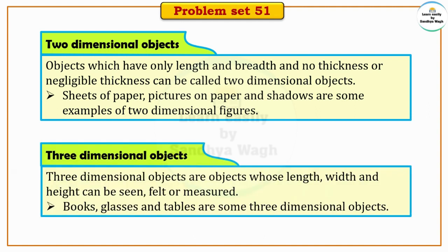Three dimensional objects are objects whose length, width, and height can be seen, felt, or measured. A three dimensional object has length, width, and height. Books, glasses, and tables are some examples of three dimensional objects.